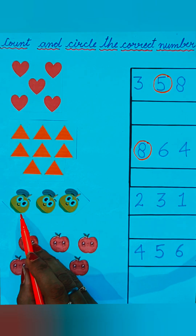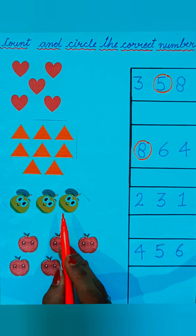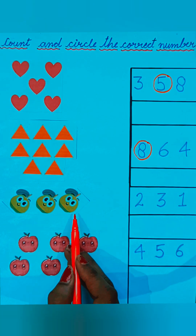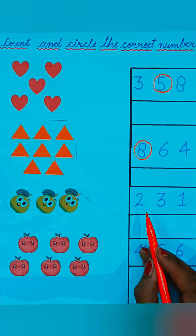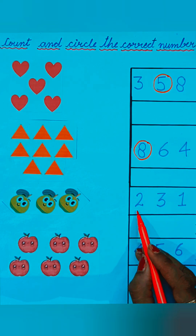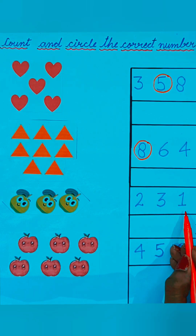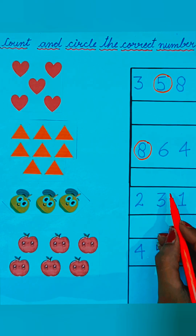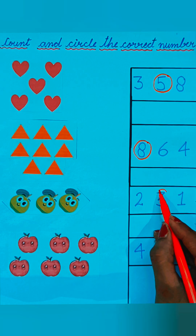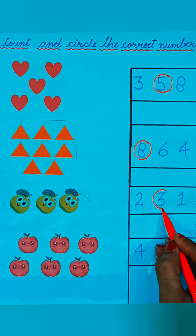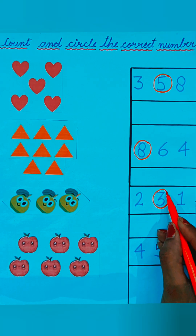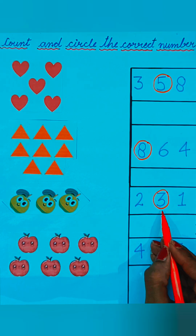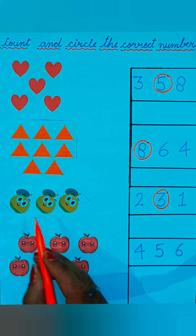Now see the guava. Let's count: one, two, three — three guavas are given. See the numbers: two, three, one. Which is the correct one? Three is the correct number, so we will circle on number three because three guavas are given.